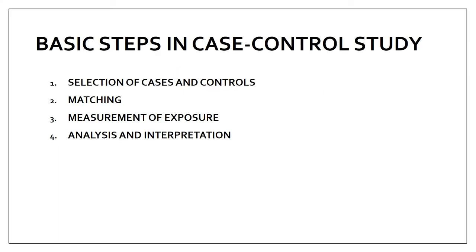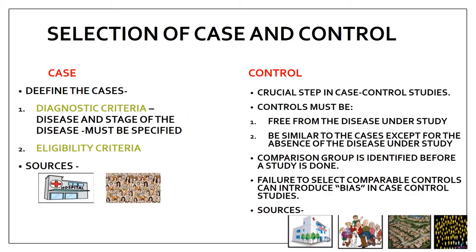The basic steps in case-control study are: first, select cases and controls; second, match them; third, measure the exposure; and finally, analyze and interpret the study. For the first step — selection of cases and controls — a case is a person already having the disease, and a control is one without the disease.